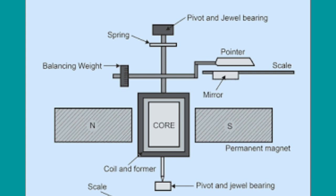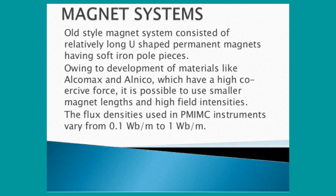Another important part is the magnet system. The PMMC instrument uses a permanent magnet for creating the stationary magnetic field. Alcomax and Alnico are the materials used for creating the permanent magnet, because these magnets have high coercive force. The coercive force is what changes the magnetization property of the magnet.